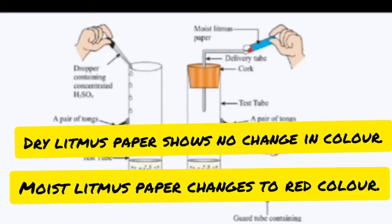When you use a moist litmus paper, it turns red. From this we conclude that HCl, when it comes in contact with water, shows acidic character. Only then does it produce its H+ ions. So acids ionize in water solution — water is essential; without it, ionization will not occur.